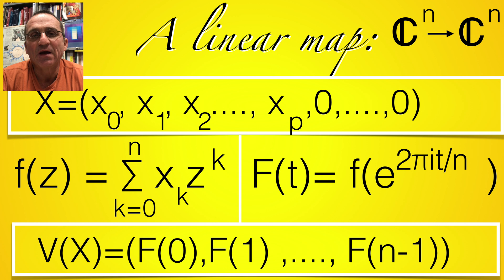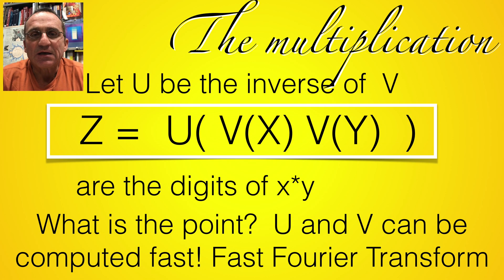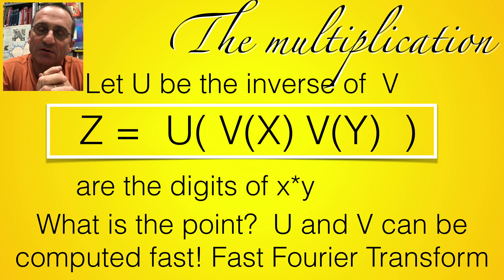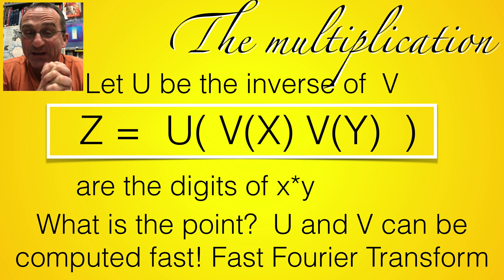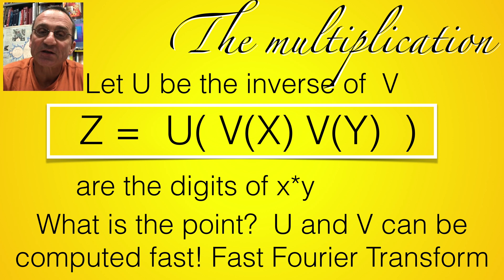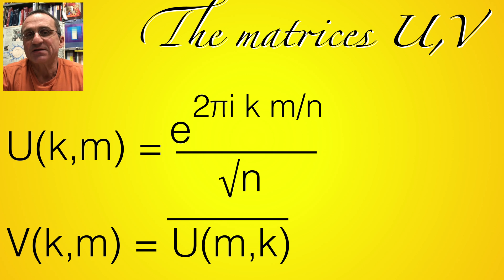So that's a linear map, and then you can form this linear map v of x times v of y, and then take the inverse of that, and that's your vector z, which contains the coefficients of the product. But what's the point? The reason is that u and v can be really computed very fast using the fast Fourier transform, and that drops the complexity.